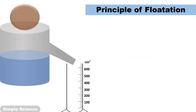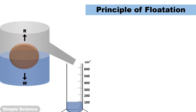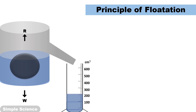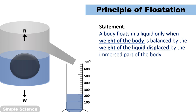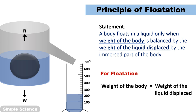Principle of floatation. When a solid body is immersed in water, the level of water increases and water gets displaced. The principle of floatation states that a body floats in a liquid only when the weight of the body is balanced by the weight of the liquid displaced by the immersed part of the body. For floatation, weight of the body equals weight of the liquid displaced. If a heavier object is taken, it displaces more water to balance its weight.